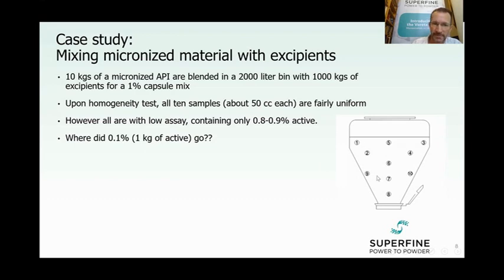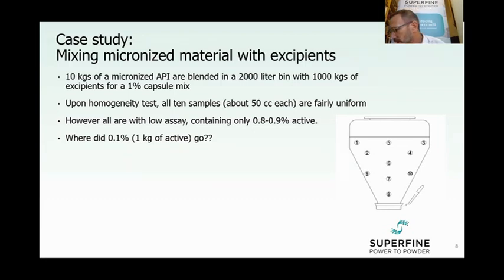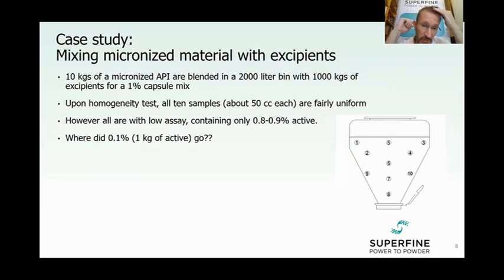They take all 10 samples — about 5 milliliters each — so 50 milliliters total. The samples are quite uniform; all of them are uniform. But the assay for all of them is low: instead of having one percent active, they have only 0.8 to 0.9 percent. All the samples have low assay but are very uniform — they're all the same. The formulator doesn't understand what happened. They think maybe the micronized material was out of assay, maybe there was a chemical problem, or maybe it was blown away as dust.